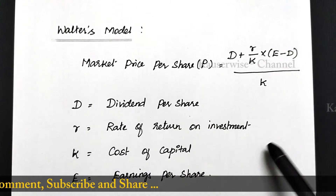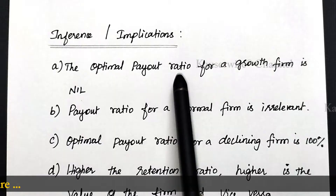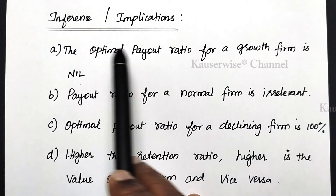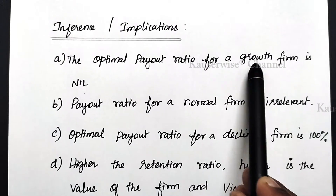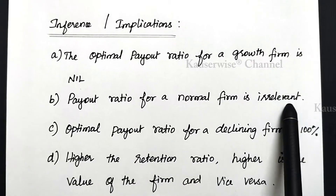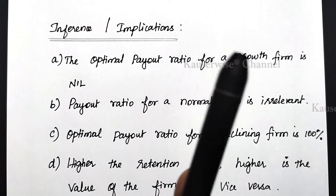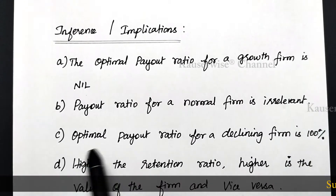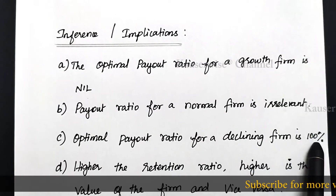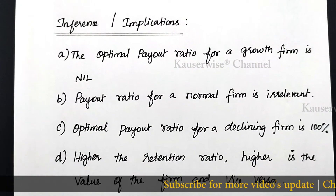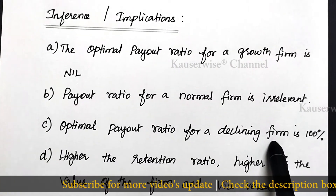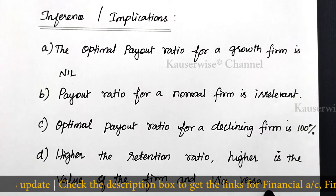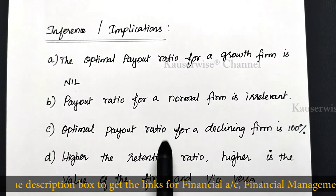The implications of Walter's model are: first, the optimum payout ratio for a growth firm is nil — that is, 0% payout is the optimum payout ratio for a growth firm. Second, the payout ratio for a normal firm is irrelevant — whatever may be the payout ratio, it is not going to affect the firm. Third, the optimal payout ratio for a declining firm is 100% — the company has to declare the entire profit as dividend. Additionally, higher the retention ratio, higher is the value of the firm and vice versa. These are the important implications under Walter's model.